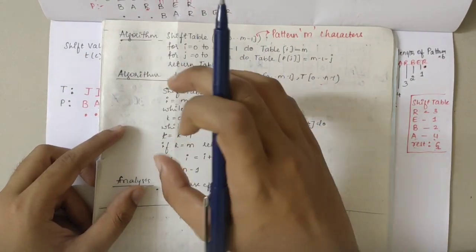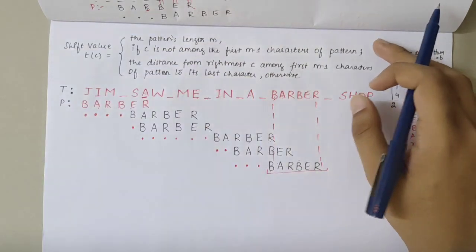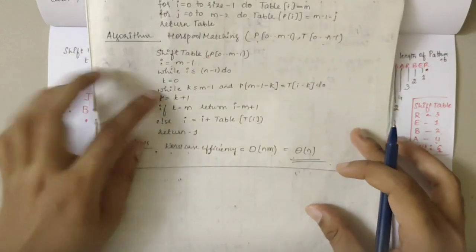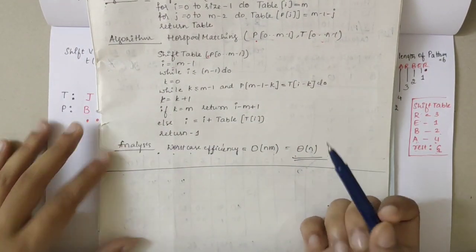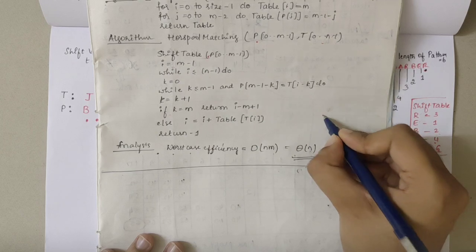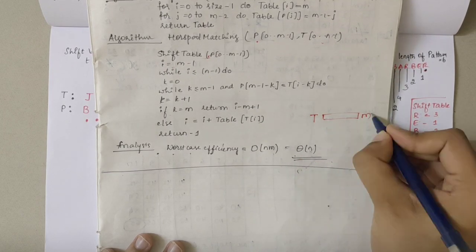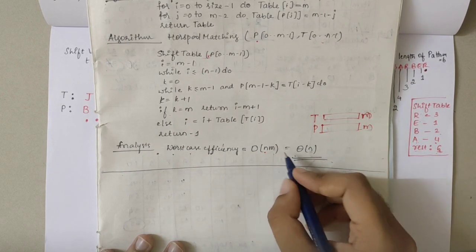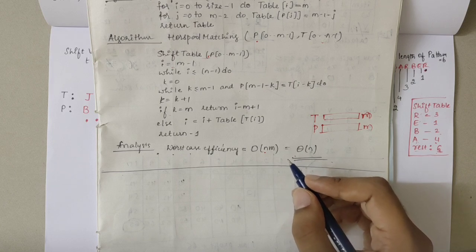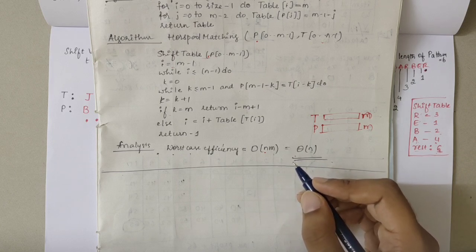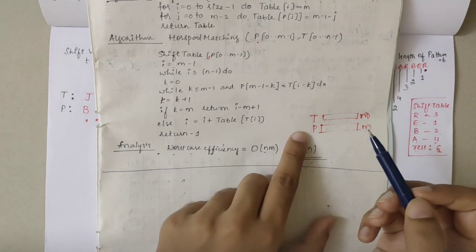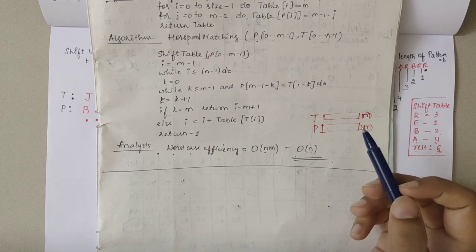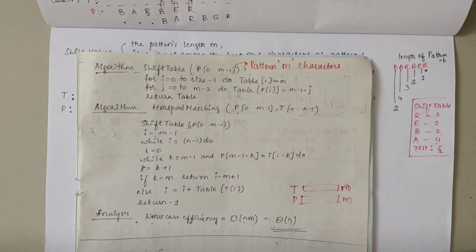Rather than over-emphasizing the algorithm code, if you understand which case is being applied at each position, it will be very easy to understand this topic. For worst-case analysis, if the text is N and the pattern is M, I need to iterate N times M — that is O(N·M) — to check if the required pattern is present in the text. That was the Horsepool algorithm. If you have any doubts, let me know in the comments and subscribe to the channel. Thank you.